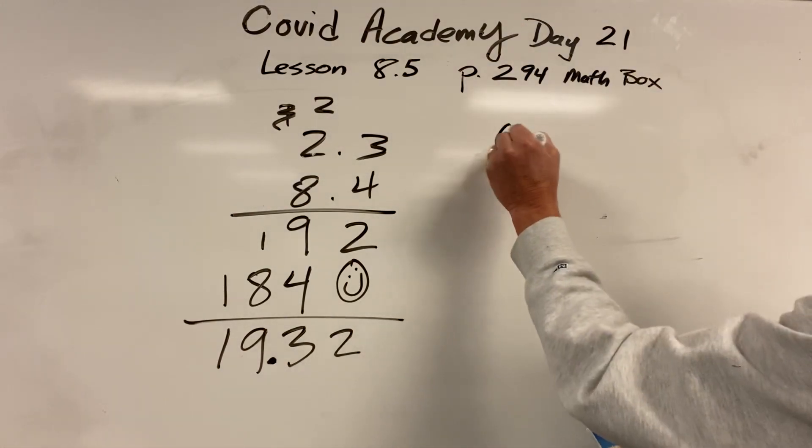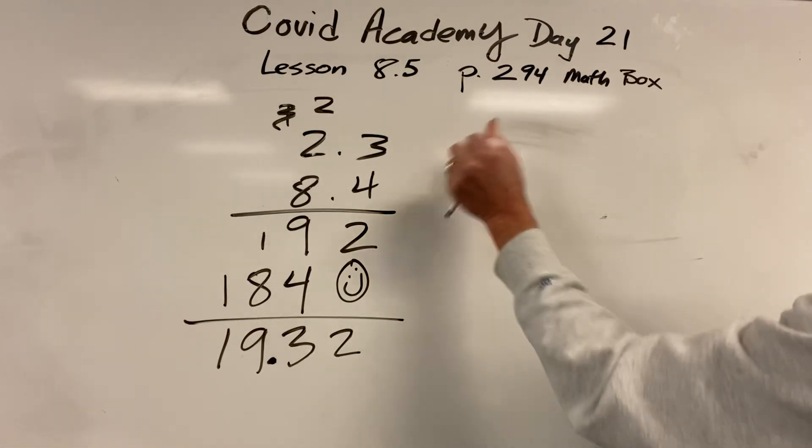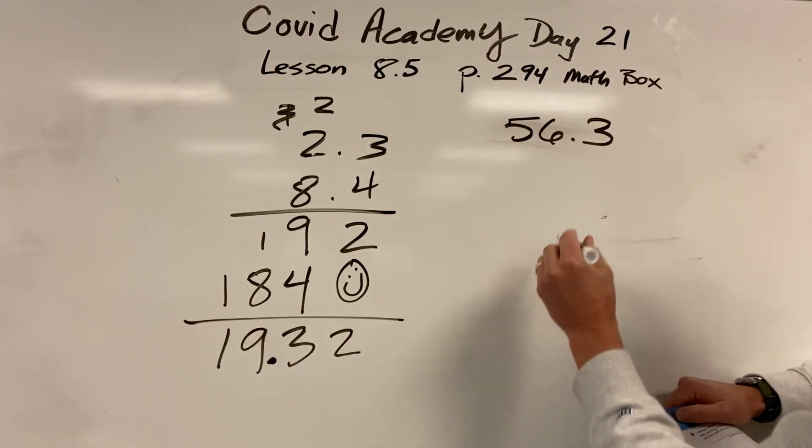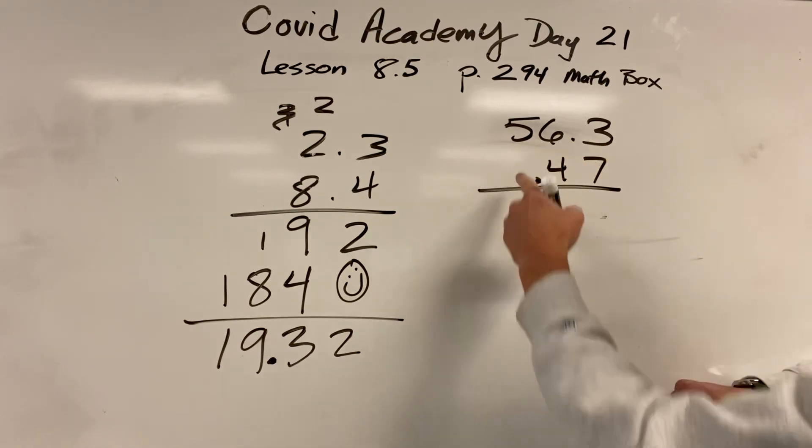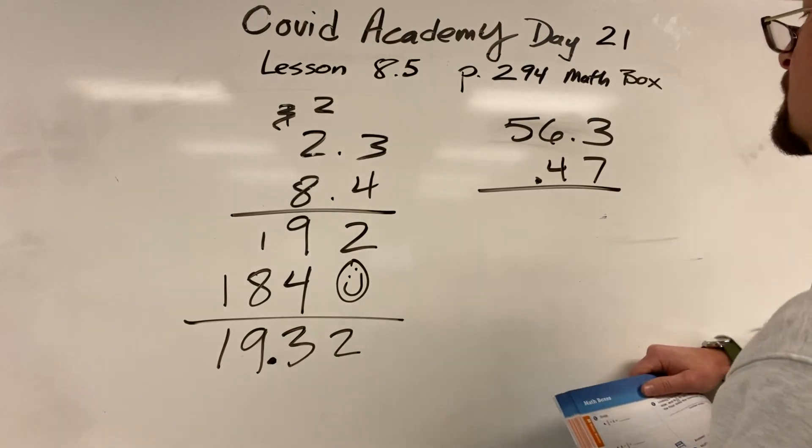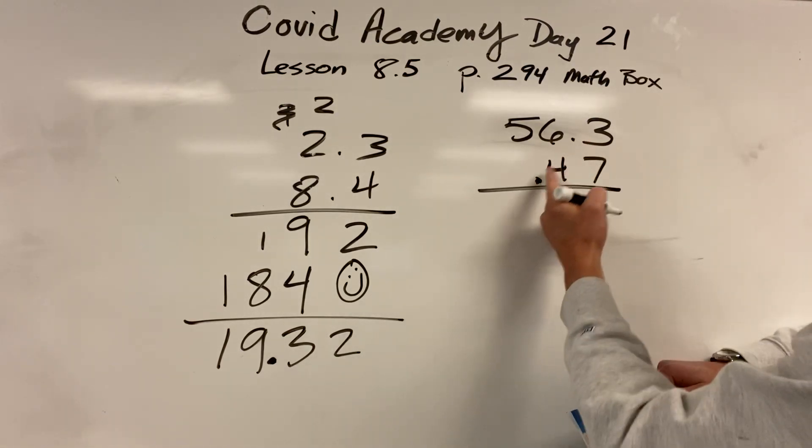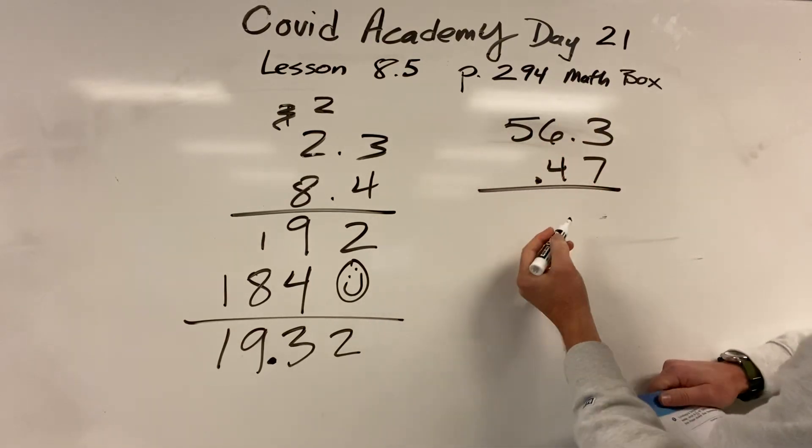Let's do the next one. 0.47, 56.3. No, I'm putting 56.3 on top. I like that better. Because that 0.47, we don't need to leave that 0 on there. That's just going to mess with us. Just get rid of that sucker. You don't need it. So, it won't change the answer. Doesn't matter that the decimals aren't lined up. I just multiply it like it's 563 times 47.